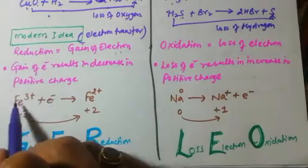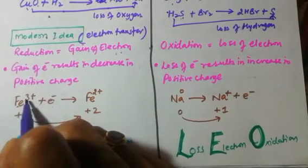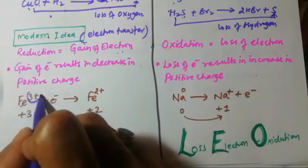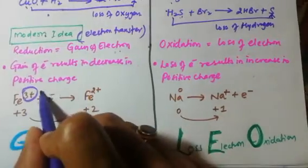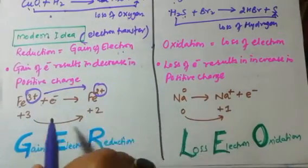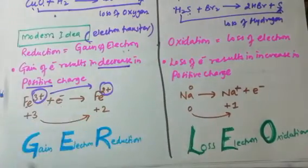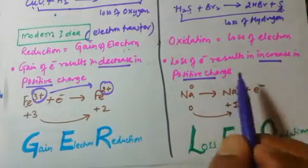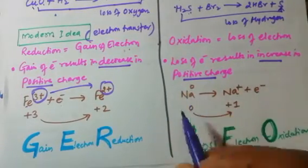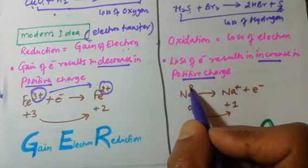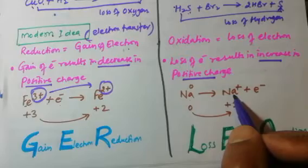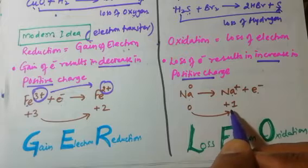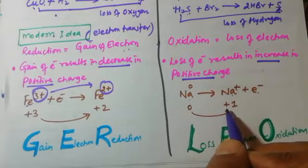Gain of electrons results in decreasing positive charges. For example, Fe³⁺ gains one electron — the charge decreases from three positive to two positive. That is reduction. Loss of electrons results in increasing positive charge. For example, sodium goes from zero oxidation number to Na⁺, losing one electron — that is oxidation.